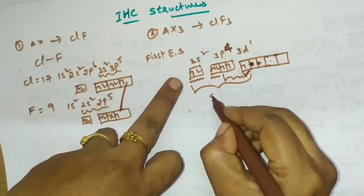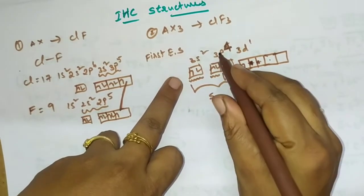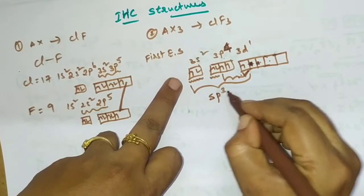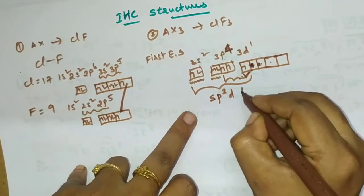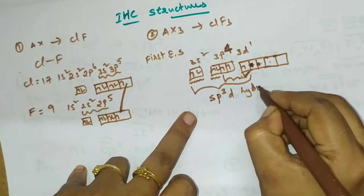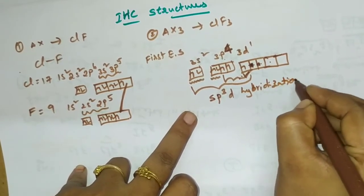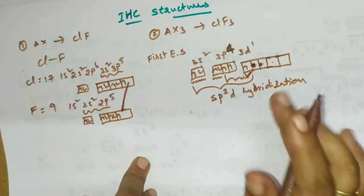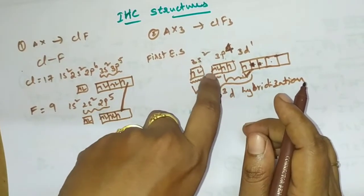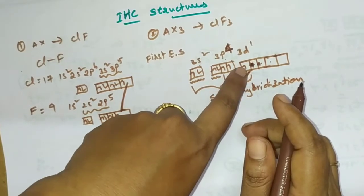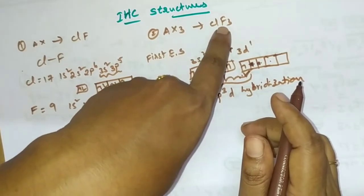SP3D hybridization in the form of hybridization. In the first excited state, when we pump one electron, we have 3 single electrons and 3 fluorines, we are going to form a bond. Very important question. If we use the same, we can use the same. If we take place in the second excited state, we will form a bond.